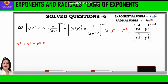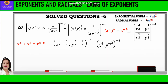Now whenever two exponents are divided, we subtract the powers. We can see both variables x and y appear in numerator and denominator, so we subtract their powers and write x raised to power 4 by 3 minus 1 by 3, into y raised to power 1 by 3 minus 7 by 3, and the whole raised to power minus 4. Taking LCM, we get x raised to power 3 by 3, into y raised to power minus 6 by 3, and the whole raised to power minus 4.